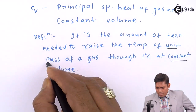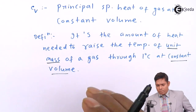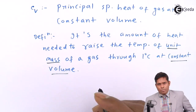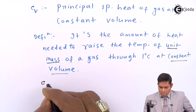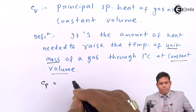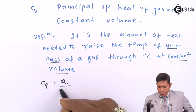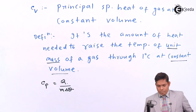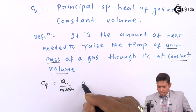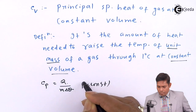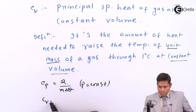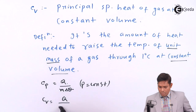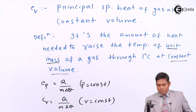The mass is always unit mass, so this is called the principle specific heat of the gas. The formula for both: Cp equals heat Q divided by mass m times delta theta at constant pressure, and Cv equals heat Q divided by mass m times delta theta at constant volume.